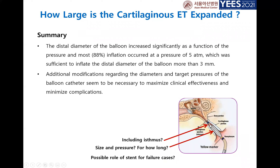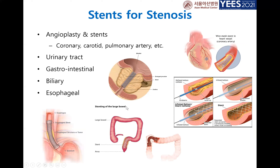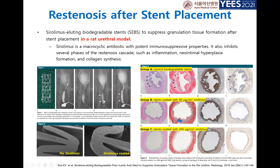We don't yet know how deep dilation should be performed or the possible role of a stent. Because we have failure cases, we need another option. We can repeat balloon dilation, but there should be another treatment modality — a stent for stenosis, as stents are used in many systems such as angioplasty and urinary, gastrointestinal, and biliary stenosis. We believe a stent is also needed here.